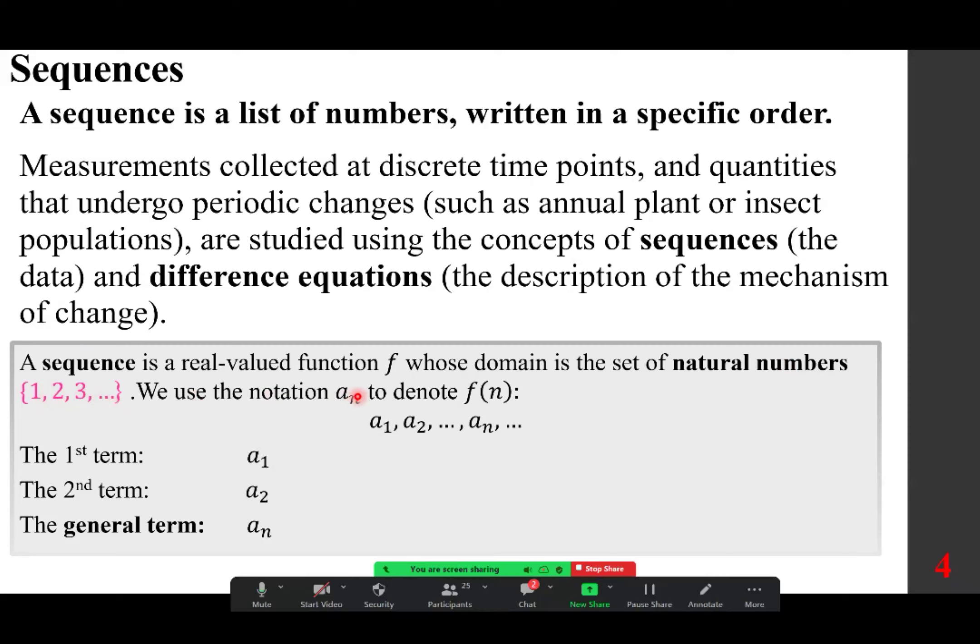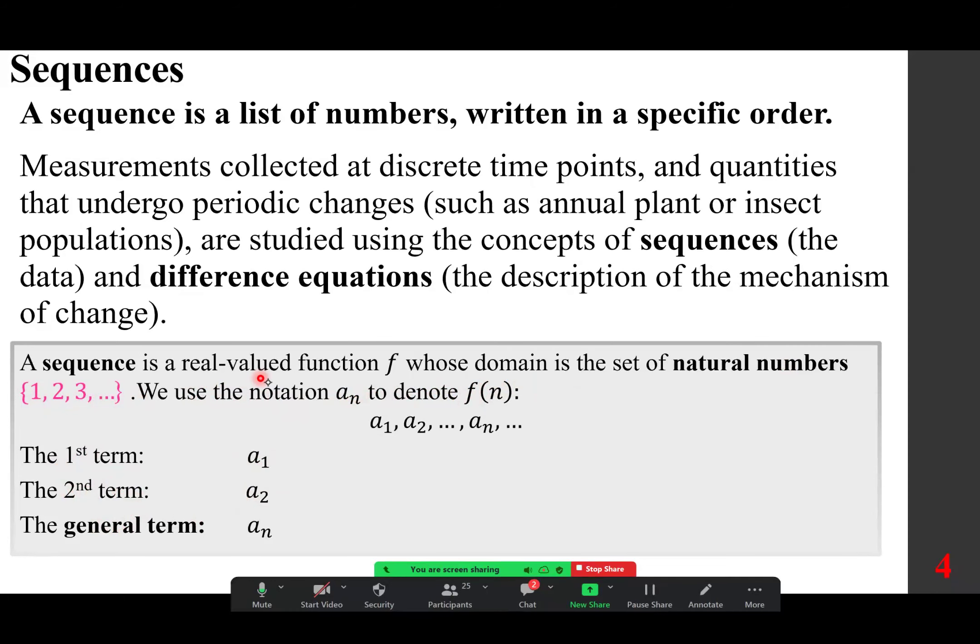We use the notation a sub n to denote f of n. And so the first term is a sub 1, second one is a sub 2, and the general term is a sub n. And as you recall, we have, for example, whole numbers. If we put 0, 1, 2, 3, we have rational numbers, irrational numbers, real numbers.